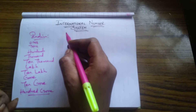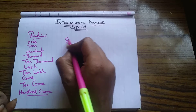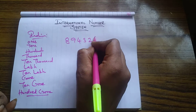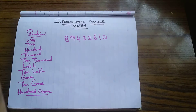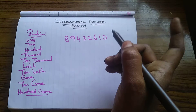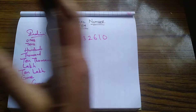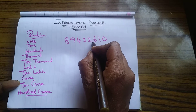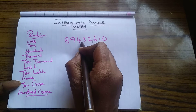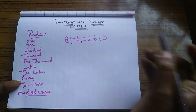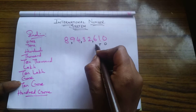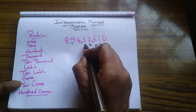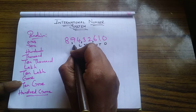We also learned about how we are going to place the commas. For example, the number 89432610 — from right to left, you place a comma after three digits, then again two, then again two. Then you use the place value to name it very easily. This is what we saw in the previous video.